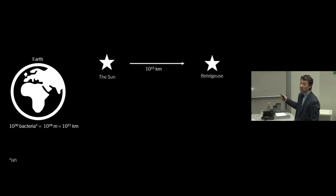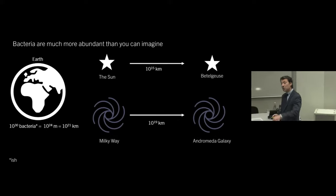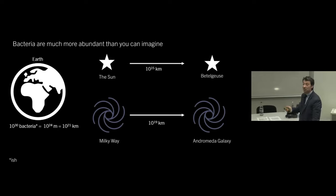If we take our measurement of one micron per bacterium, that's about 10 to the 24 meters or 10 to the 21 kilometers of bacteria. That is a huge distance. If we look at the distance from the Sun to the nearest star, it's about 10 to the 15 kilometers. And if we look at the distance from the Earth to the next galaxy over, it's about 10 to the 19 kilometers. So we could make a stack of bacteria that goes from here to the Andromeda galaxy 100 times over. That's a lot of bacteria. Bacteria are so abundant, they're more abundant than you can imagine.